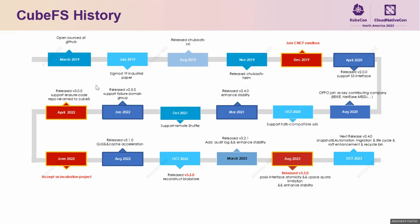In 2023, throughout this year, we have released several versions. This includes the refactoring of the erasure coding subsystem, support for auditing, and improvements in stability. In our recent release, we added support for automatic POSIX interface and space quota management. The upcoming version will include features such as snapshots, automated disk migration, lifecycle management, and recycle bin.